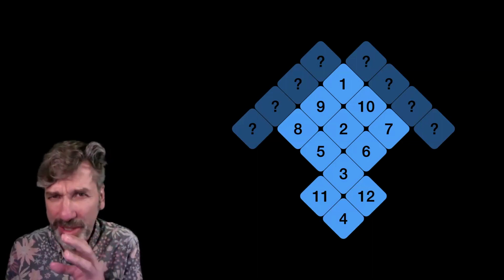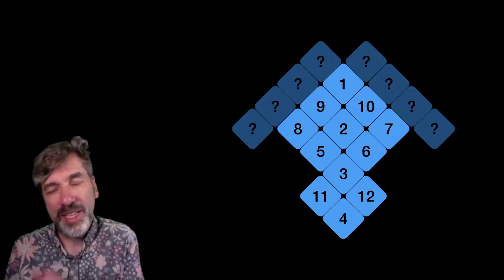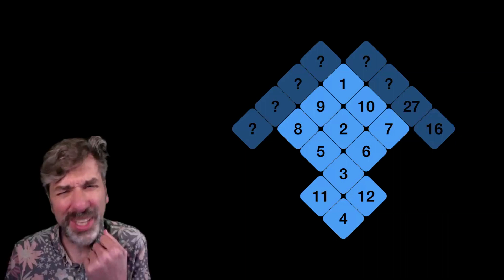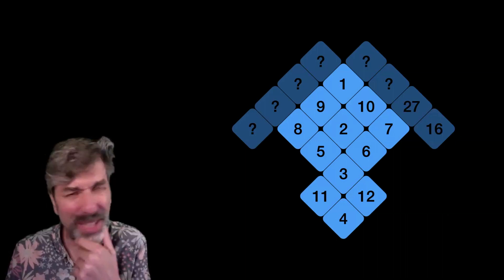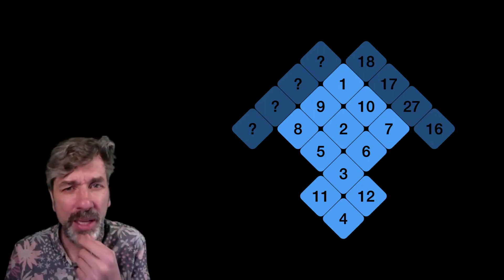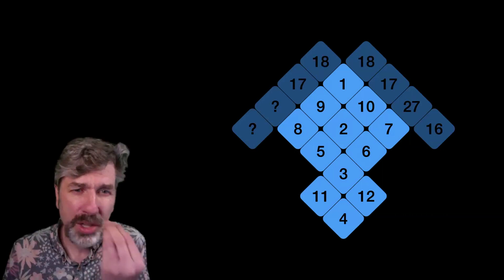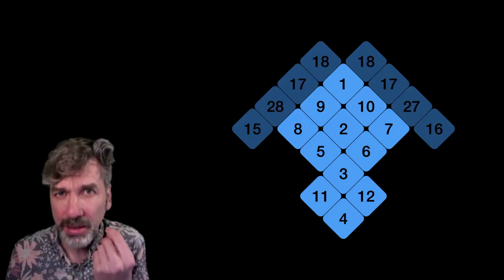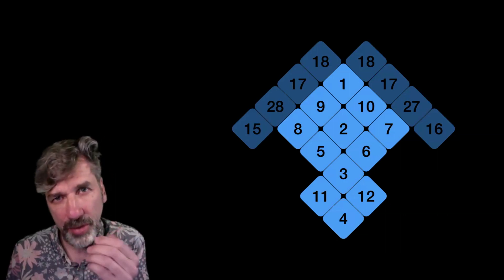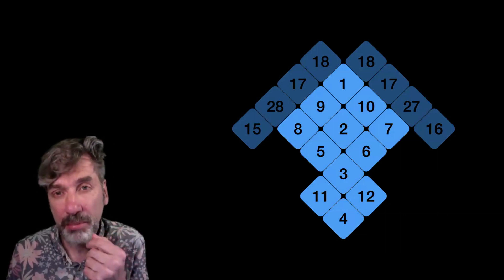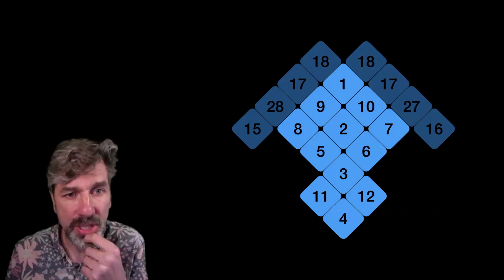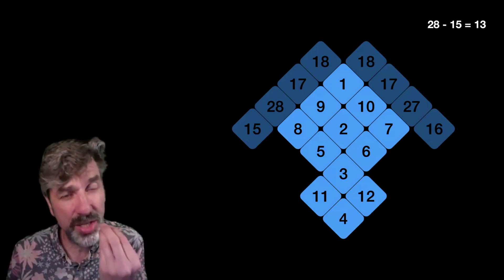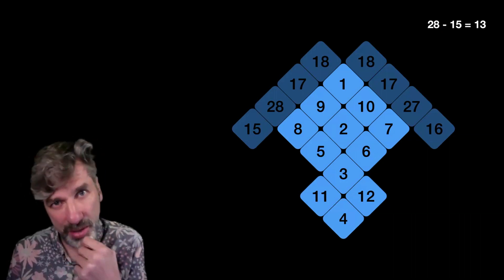Have I made them all the same? 14. 4 plus 12 is equal to 16. 11 plus 3 plus 6 plus 7, oh, that's much higher, 27. We're really doing badly here. How could we score this magic? Well, we can look at the highest number from one of these rows or columns. So 28 minus the smallest, which is 15. 28 minus 15 is equal to 13. So 13 is our score.